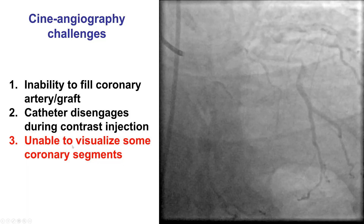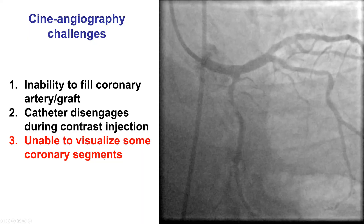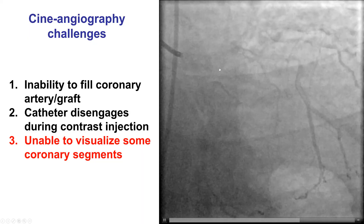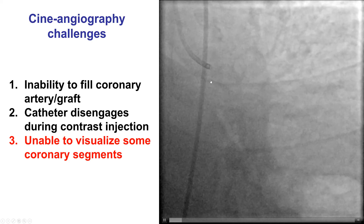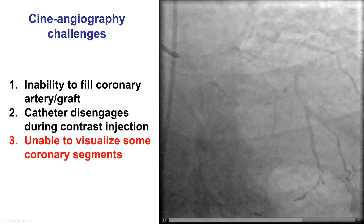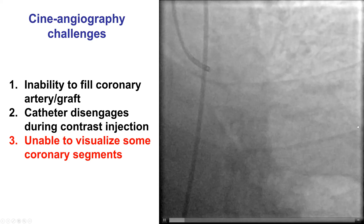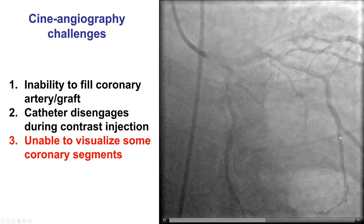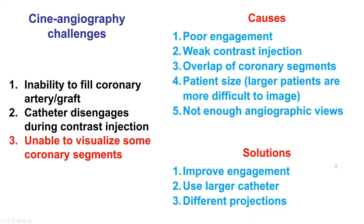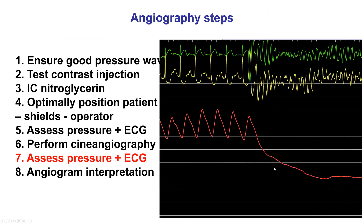A third challenge with cine angiography is inability to visualize some coronary segments, and this sometimes has to do with setup. In this case, the patient was not positioned optimally and the image receptor could not go all the way to visualize the distal portions of the LAD and the obtuse marginals. The most common causes are poor engagement, weak injection, overlap of coronary segments, large patient, or insufficient views obtained. Solutions include better engagement, use of a larger catheter, and use of different projections.